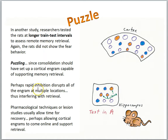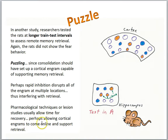This is a new technique, so a lot more research needs to be done. Scientists speculate that perhaps rapid inhibition disrupts all of the engram at multiple locations, thus interfering with retrieval. Also, other studies using pharmacological techniques or lesion studies damage one part of the brain with time for recovery, and during that recovery time consolidation may be happening — allowing cortical engrams to come online and support retrieval. Whether silencing happens soon after learning or at longer train-test intervals, silencing hippocampal neurons was interfering with memory retrieval.